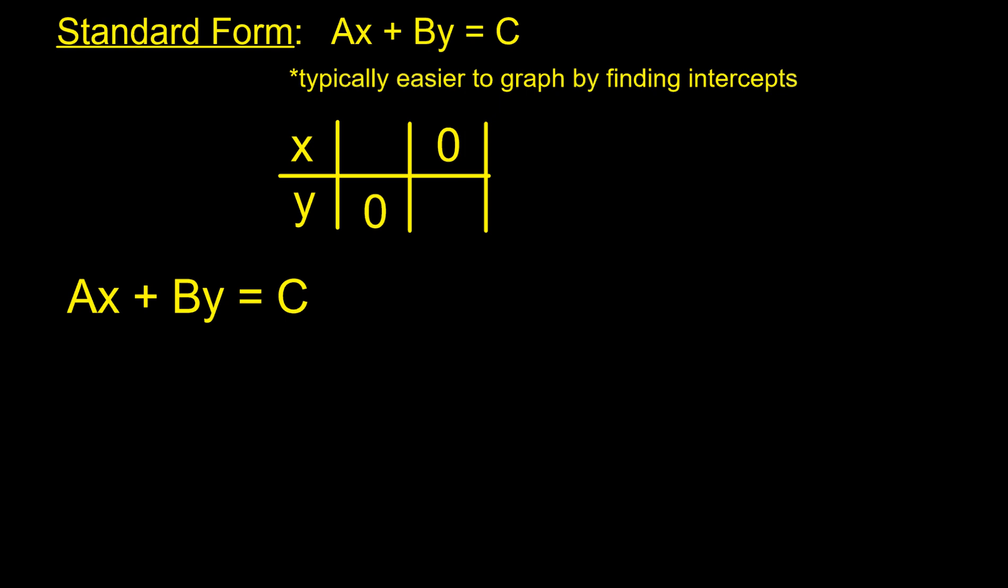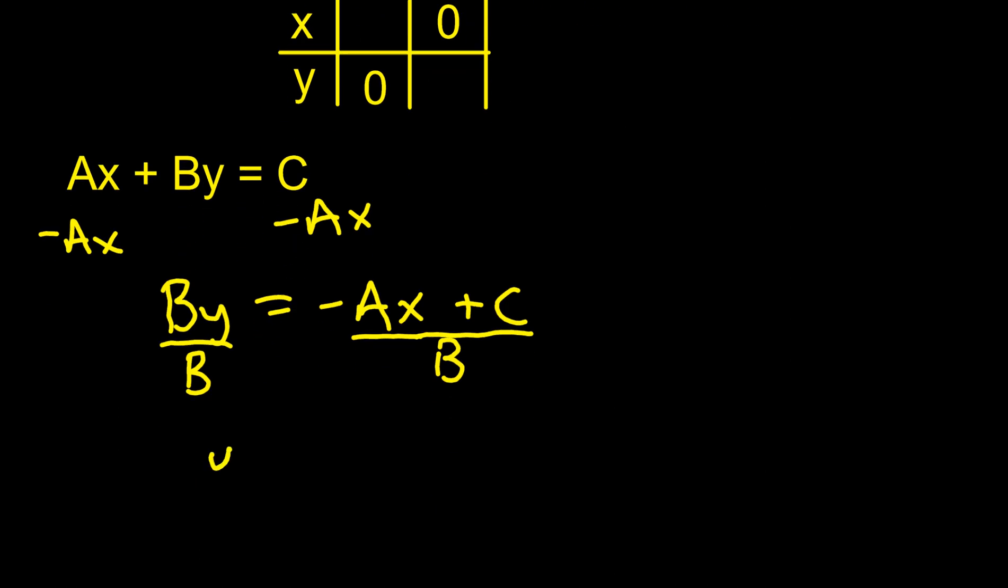So what I'm going to do is I'm going to subtract ax from both sides. Because I want to get just y by itself. So I get by equals negative ax plus c. And then I divide by b on both sides. And when I divide by b, I have to divide everything by b. So I end up with y equals negative a over b x plus c over b.